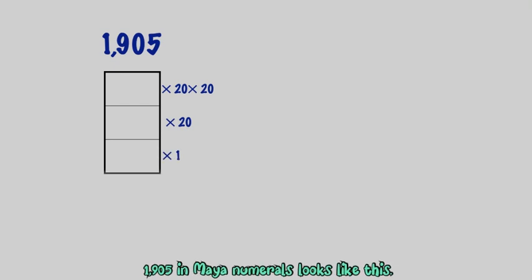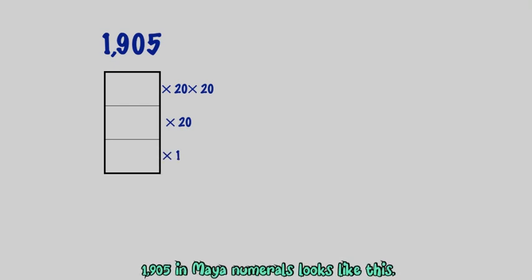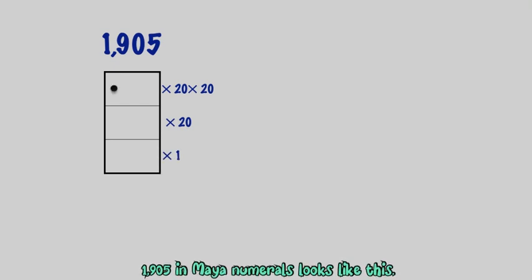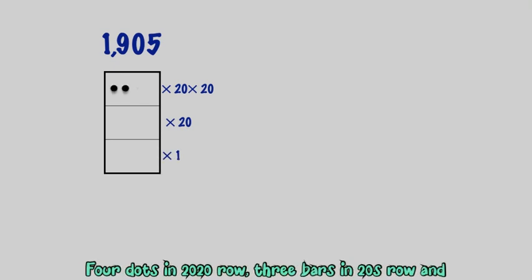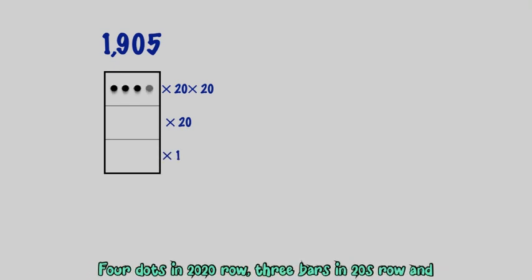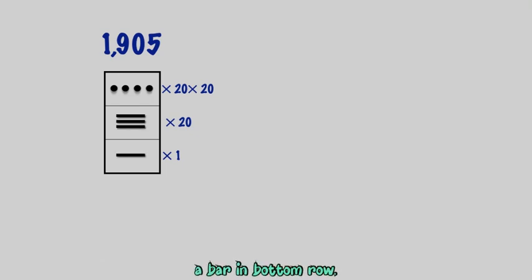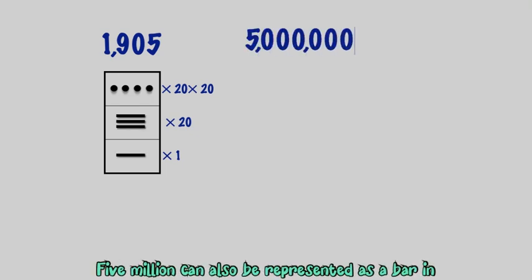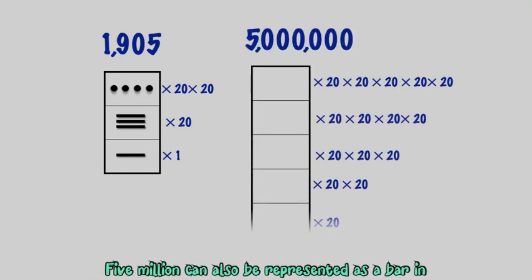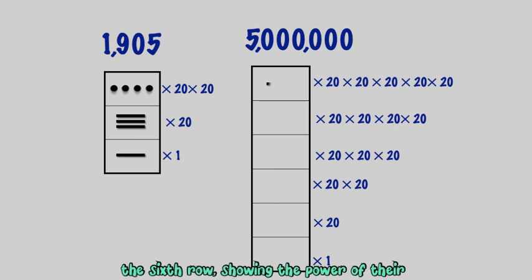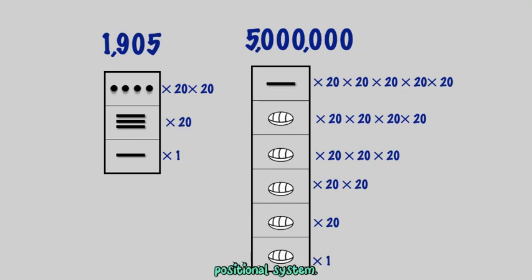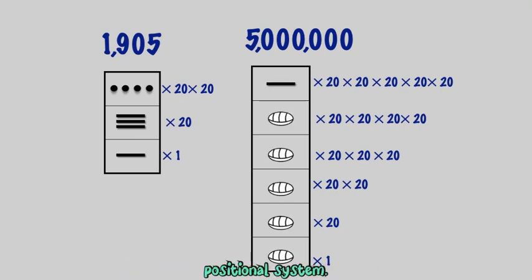1,905 in Maya numerals looks like this: four dots in the 20-squared row, three bars in the 20s row, and a bar in the bottom row. Five million can also be represented as a bar in the sixth row, showing the power of their positional system.